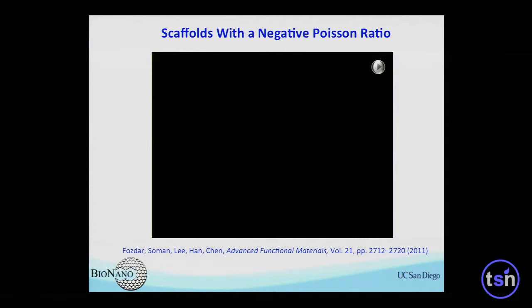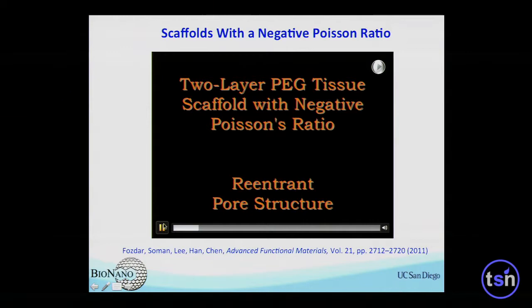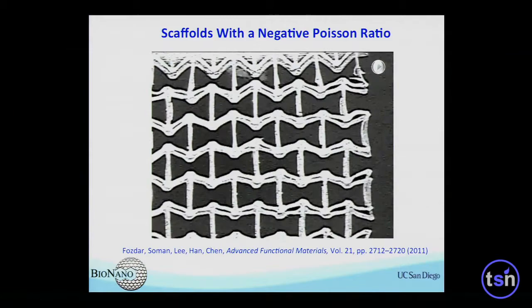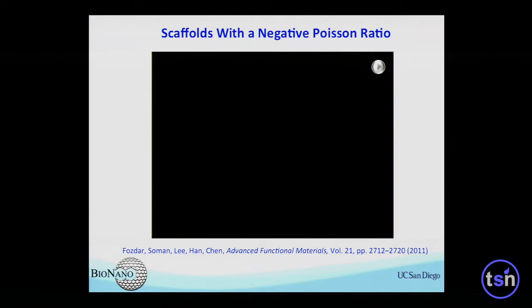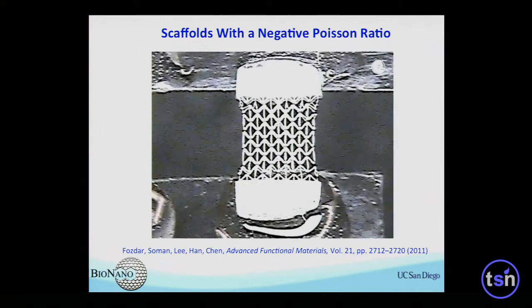In addition to chemical control, we can control mechanical properties including stiffness — controlled via molecular weight and crosslinking density. Another property is Poisson's ratio: when you stretch a material in one direction, it usually shrinks in the other — that's a positive Poisson's ratio material. 99.9% of materials in nature are positive Poisson's ratio. With 3D printing, we can create an unusual material called negative Poisson's ratio material — when you stretch it, it actually enlarges in the lateral direction.